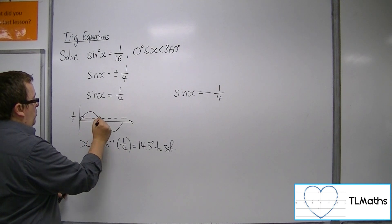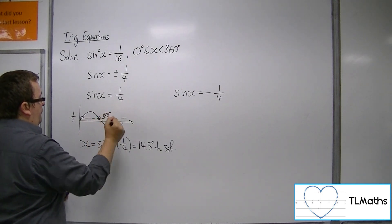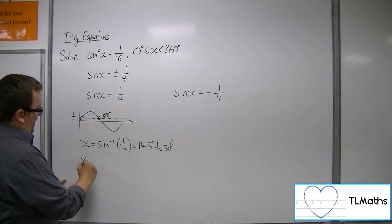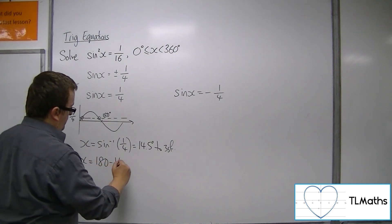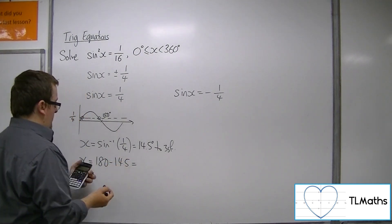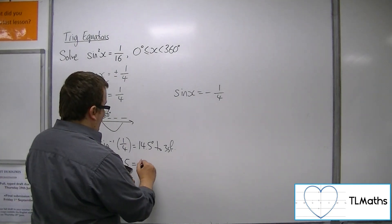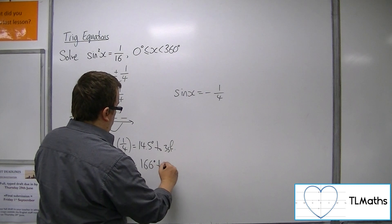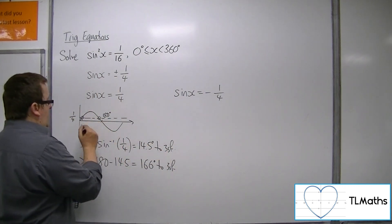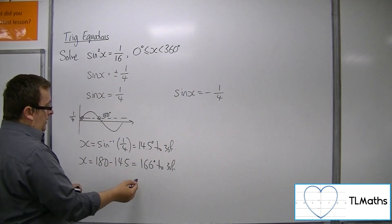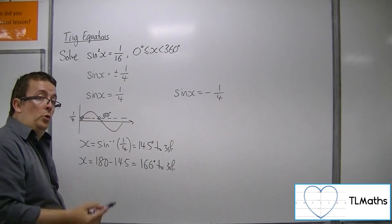So this one is 14.5 degrees away from 180. So 180 take away the answer key is 166 degrees to 3 significant figures. So they are the two solutions for sine x equals 1/4.